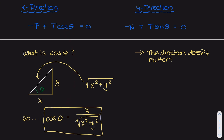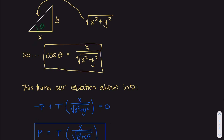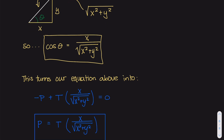Now we don't have to worry about theta anymore because we have this cosine value in terms of known quantities. We will be incrementing x from 0 to 4 meters in increments of 0.1 — starting at 0, then 0.1, 0.2, 0.3, all the way up to 4.0 meters. Plugging cosine theta into our equation gives P = T · x / √(x² + y²), where tension is 50 newtons. Now we're ready to build the algorithm.